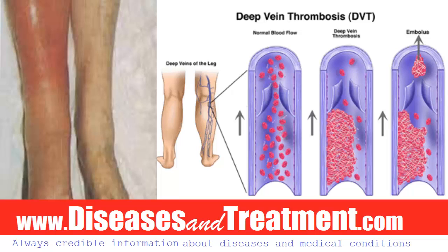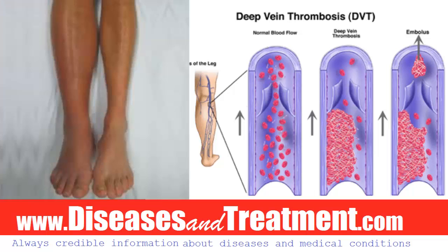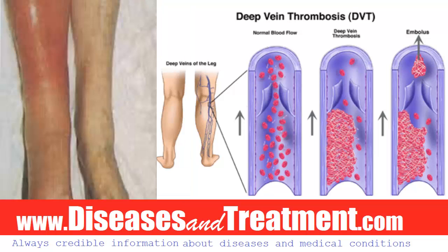Today's topic is deep vein thrombosis, or DVT, also known as blood clots in the legs. There are both superficial and deep veins in the limbs and extremities, which means in arms and legs.